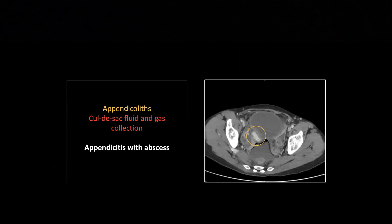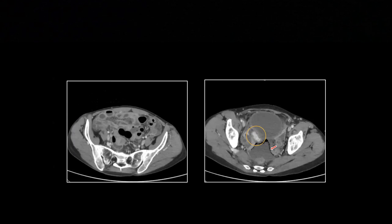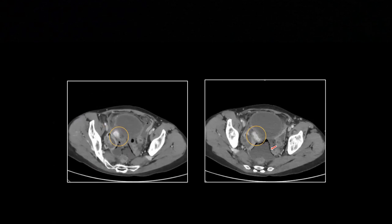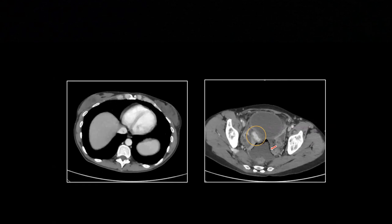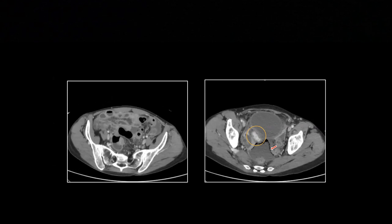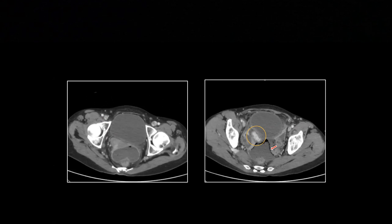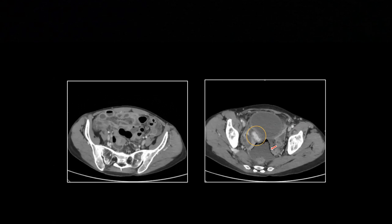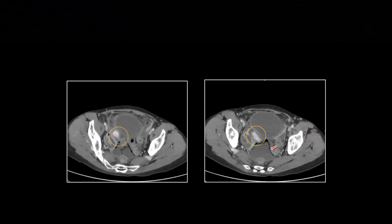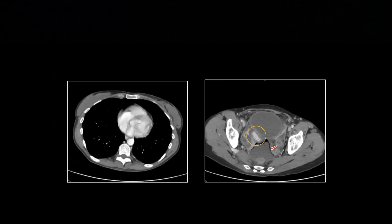The last appendicitis case: stacked-up appendicoliths, and also note a gas-filled collection of fluid within the pelvis consistent with an abscess. There's an initial appendicolith a little more proximally, and then a whole bunch of them, connected by a tubular structure. Then there's just a big collection in the cul-de-sac of the pelvis — a tubular structure connecting those, and then it's blind-ending. This abscess is just extending off the tip of that appendix. When appendicitis gets in the cul-de-sac, the inflammation can affect the rectum and even cause distal colonic obstruction.